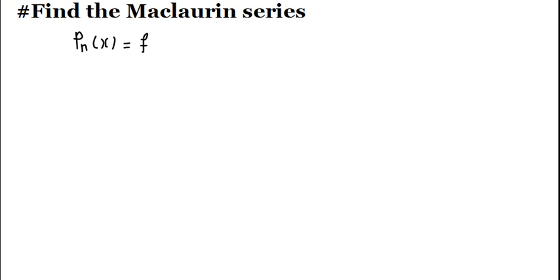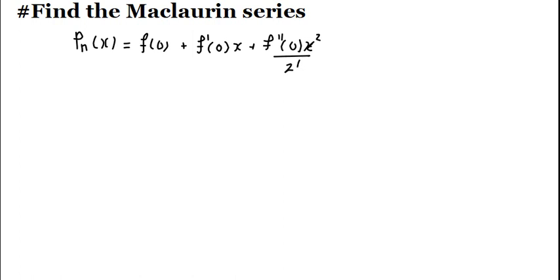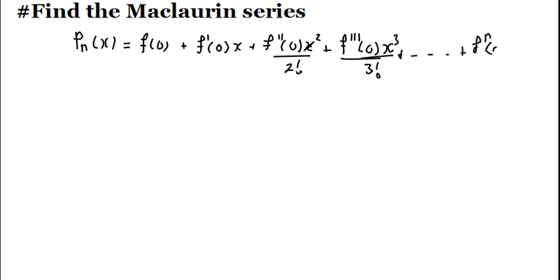The series is going to be equals to F of zero plus F prime of zero multiplied by X, plus F double-prime of zero multiplied by X squared divided by 2 factorial, plus F triple-prime of zero times X cubed divided by 3 factorial, and so on. You can sum it up as F to the N of zero times X to the N divided by N factorial.